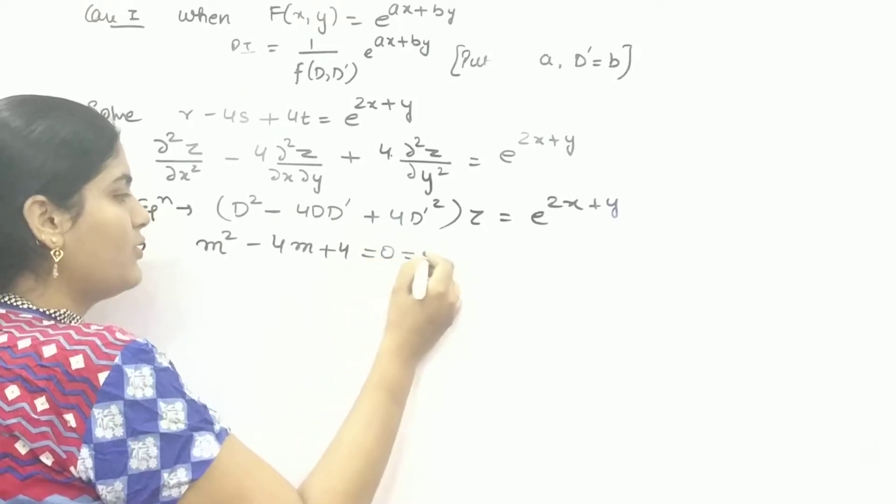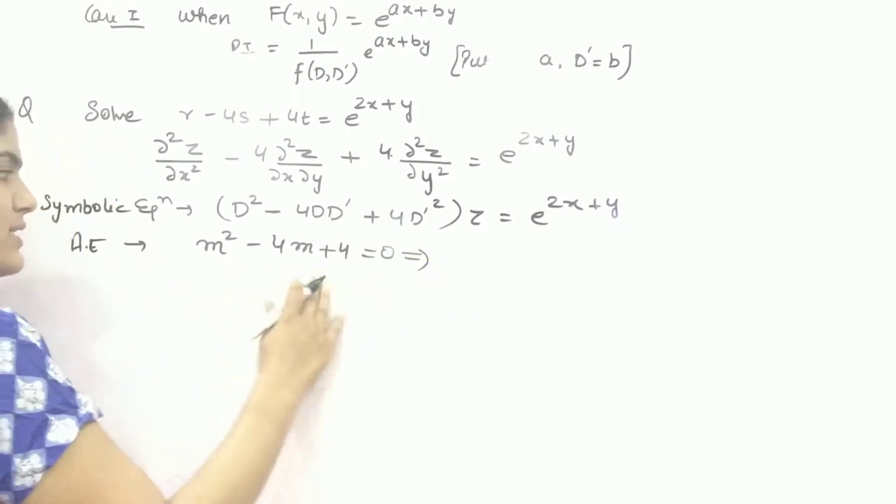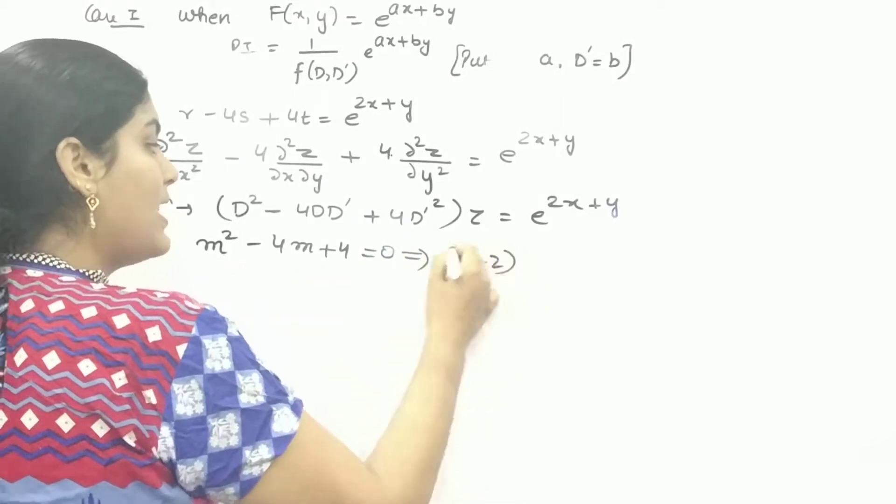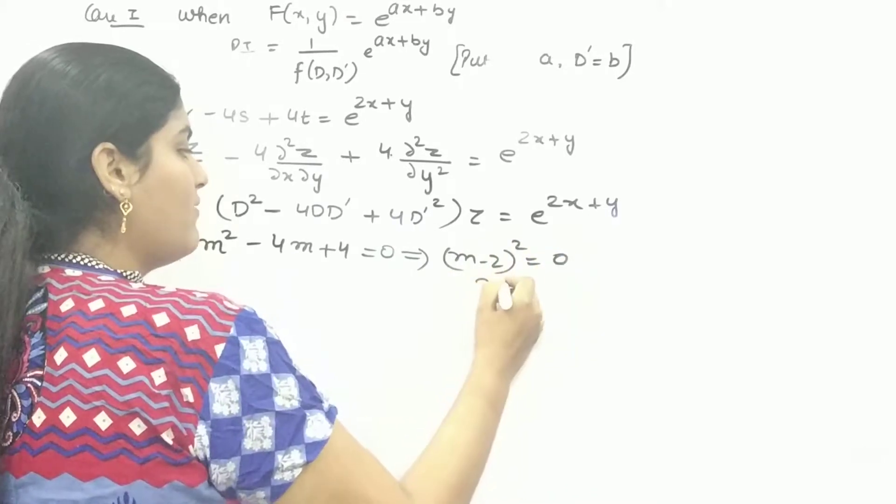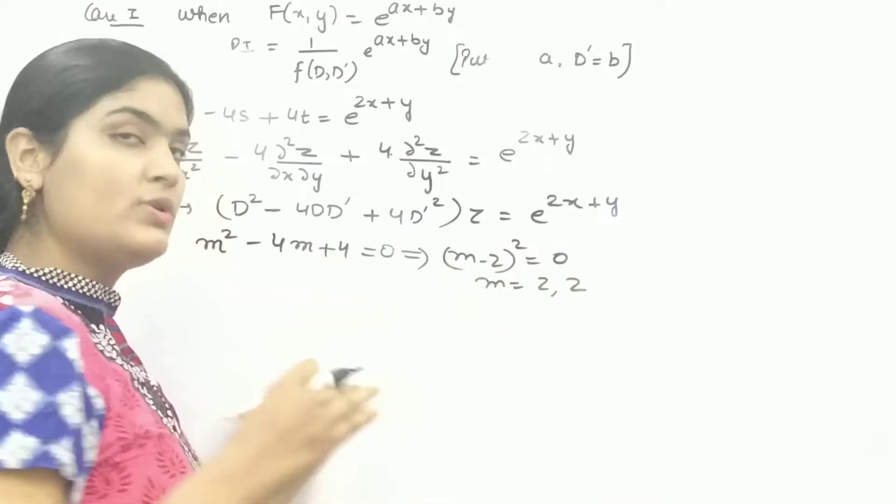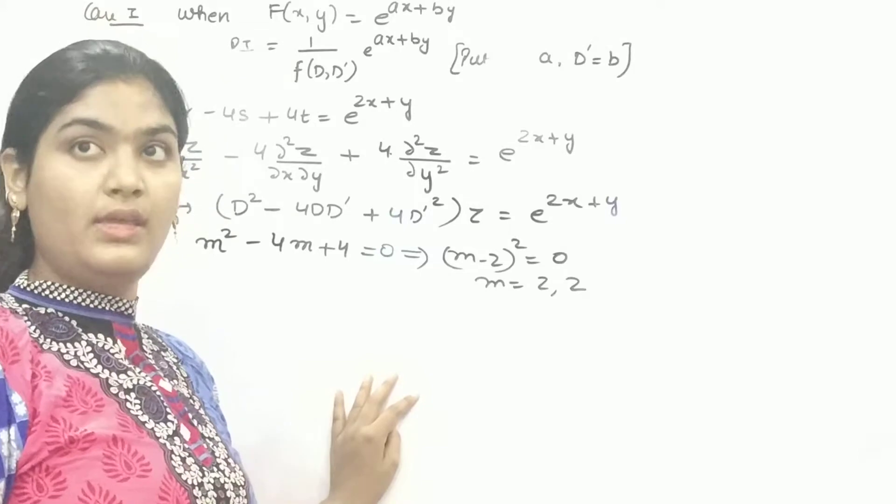Put it as zero and find out the value of M. You can see, this is M minus 2 whole squared. So your M will be, so your roots are real and equal.